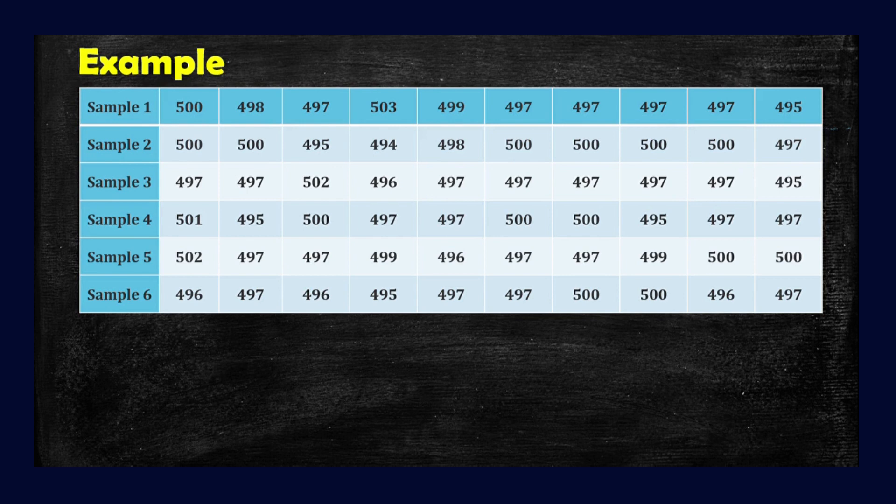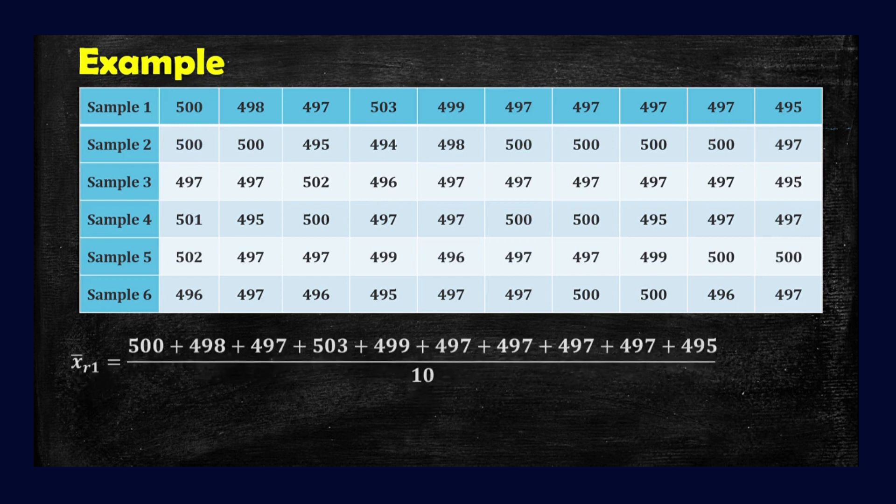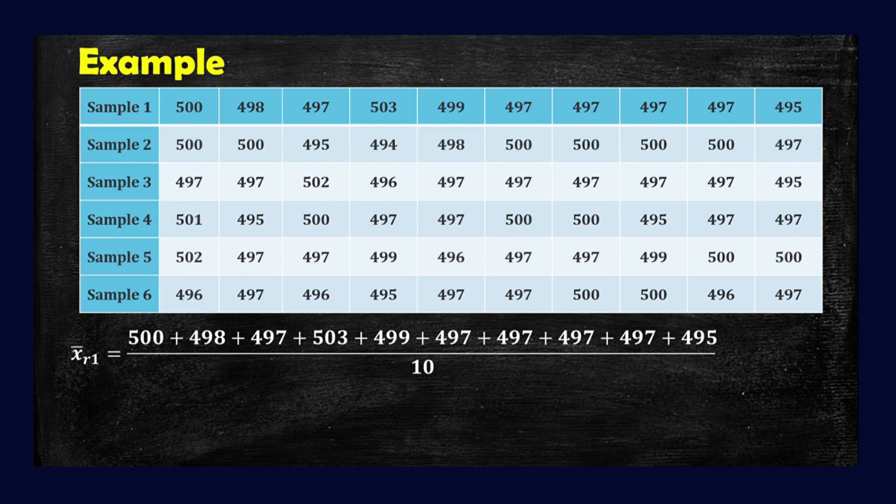So first thing that we need to do is to get the sample mean for row number 1, or sample number 1. So how can we obtain the sample mean for row 1? Just simply add our data, then divide it by the total number of our data, which is 10. So adding these numbers, we can obtain 4,980 divided by 10. So meaning the sample mean for row number 1 is equal to 498.